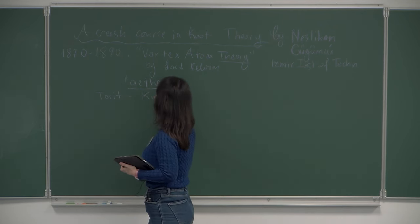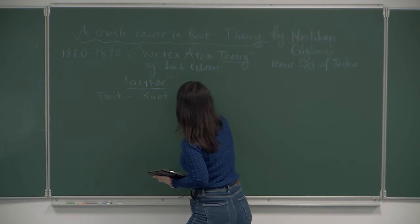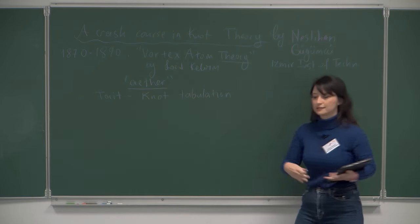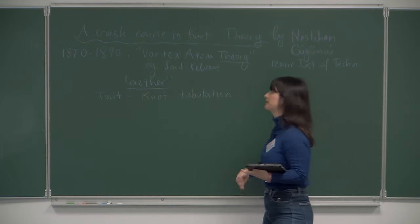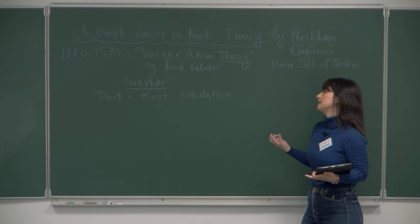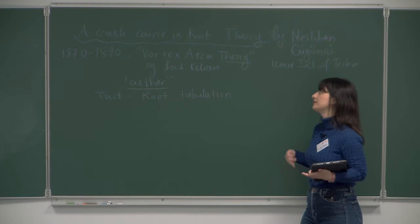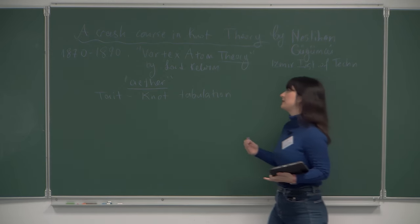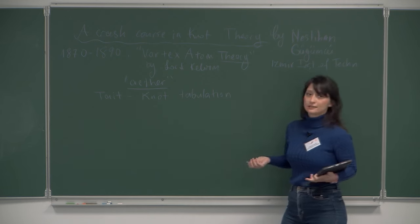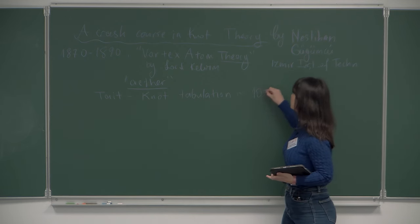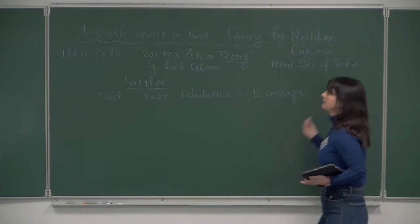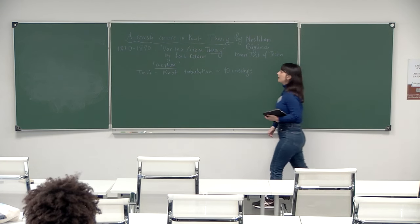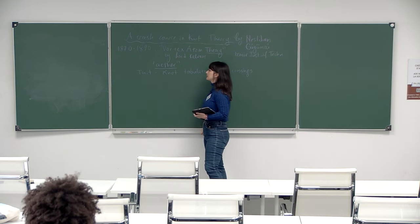After this proposal, Kelvin's PhD student Tait started to make a tabulation of knots - he sat down and made a list of knots, distinguishing which ones were different from each other. At the time there was no algebraic topological tool to separate two knots, so it was more intuitive, but it was correct up to a point. He tabulated up to 10 crossings, which you can find online.